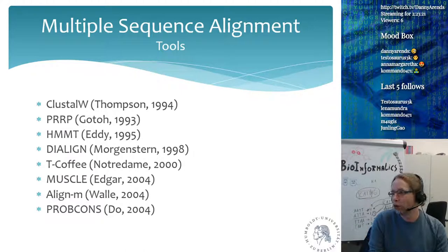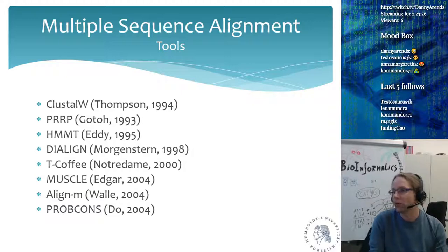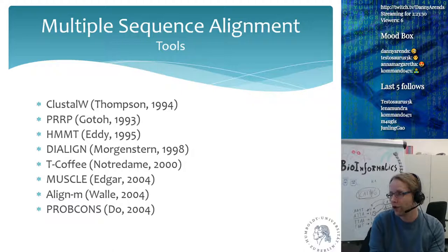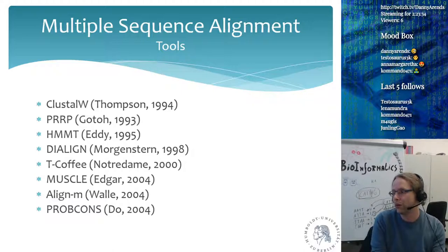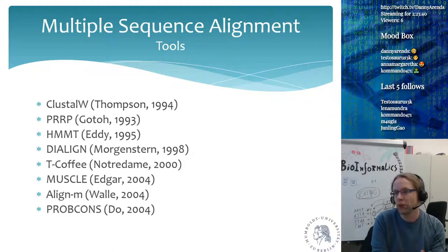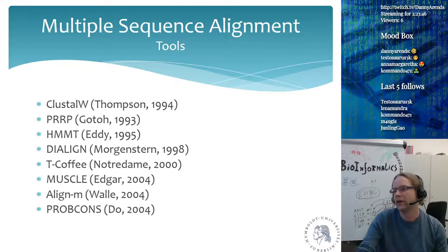Every year new multiple sequence alignment tools are produced, so when you start doing MSA it really pays off to read the literature to see what people are currently using. Generally, what people are using en masse is the one which is currently best, but all of these algorithms are continuously updated, so the best alignment tool changes every year.